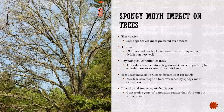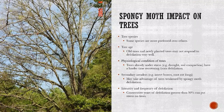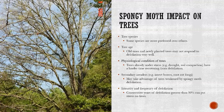Spongy moth can have a pretty significant impact on trees, and all of that impact comes from the feeding of the caterpillars — the caterpillar is the stage that does all the damage. There is a preference for oak among other species. There are certain characteristics of trees that will make them more susceptible to the defoliation caused by the caterpillars. If a tree is old, or if it's newly planted and doesn't have well established roots, it may not respond well to that defoliation. Trees that are already under stress for other reasons, whether it be drought or soil compaction, will also have a harder time recovering from defoliation.